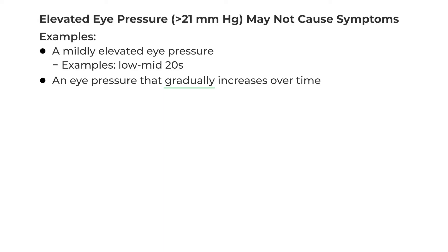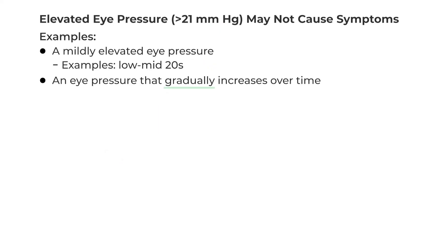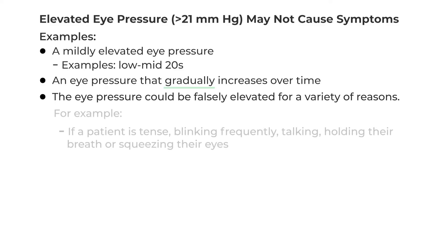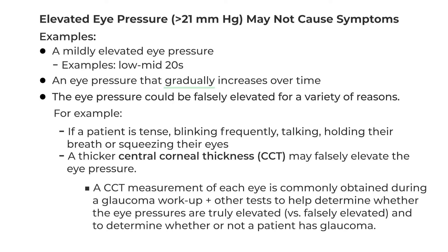Comparing that to an acute pupillary block glaucoma where the pressure spikes — those patients are miserable. Also, a patient with high eye pressure may not have symptoms because the pressure is falsely elevated. For example, if a patient is tense, holding their breath, or squeezing their eyes, that could falsely elevate the eye pressure. A thicker central corneal thickness may also falsely elevate a reading. As part of the glaucoma workup, a central corneal thickness measurement is commonly obtained, along with other glaucoma tests, to help determine whether the eye pressure is truly elevated and whether the patient has glaucoma.